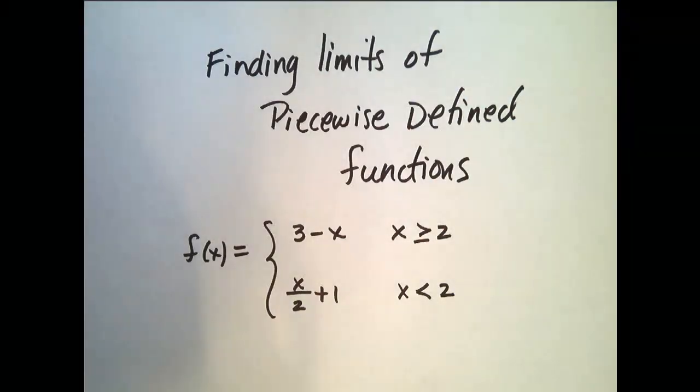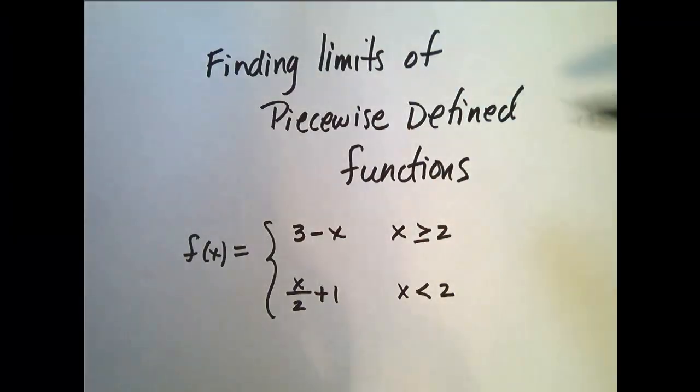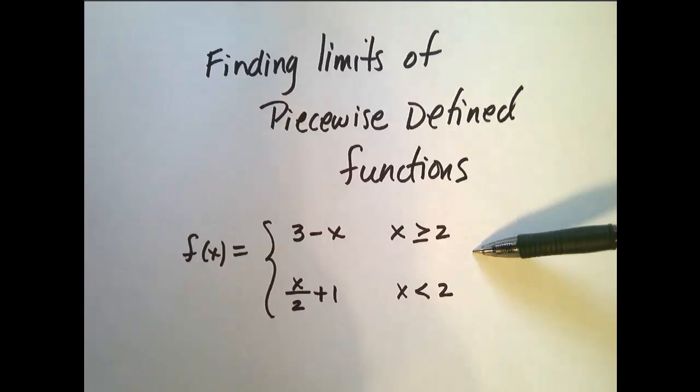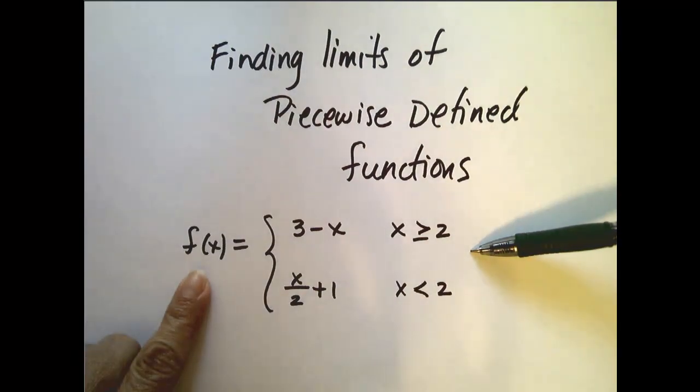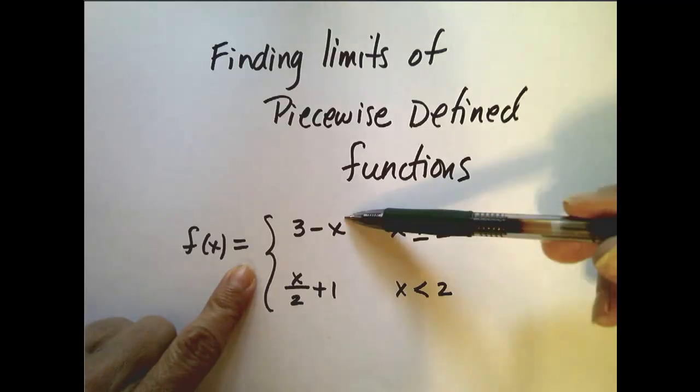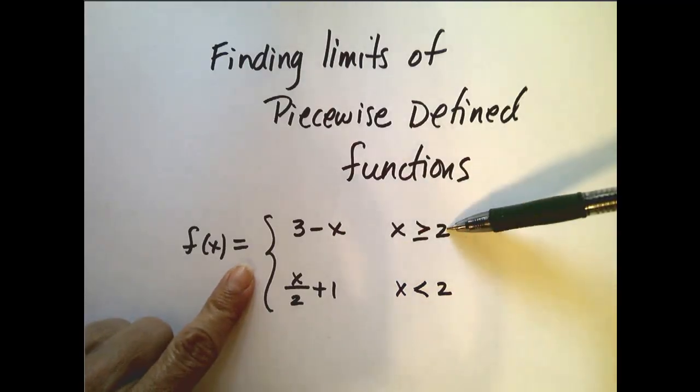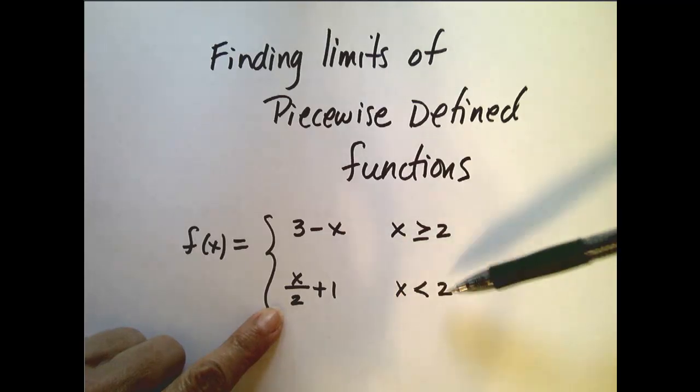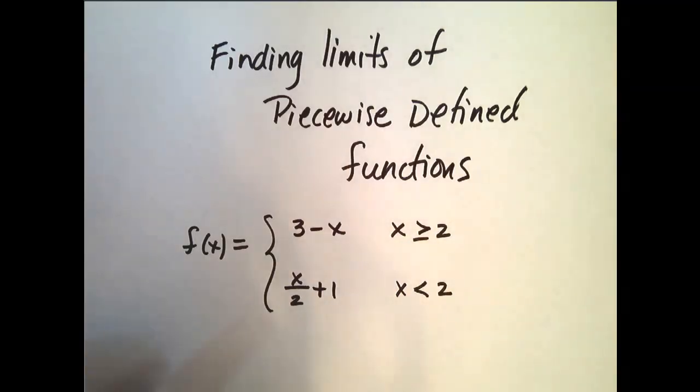In this video we're going to explore limits of piecewise defined functions. We're going to use this piecewise defined function right here to look at a couple of different examples. To be clear, this is the function f(x) which equals 3 minus x when x is greater than or equal to 2, and it equals x over 2 plus 1 when x is less than 2. We're going to look at two different limits of this function at two different values.